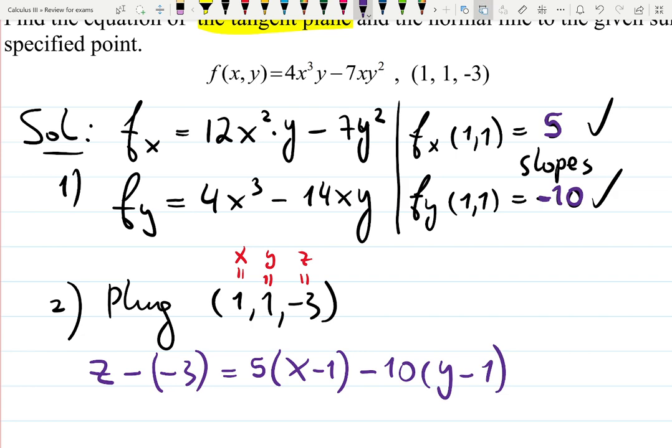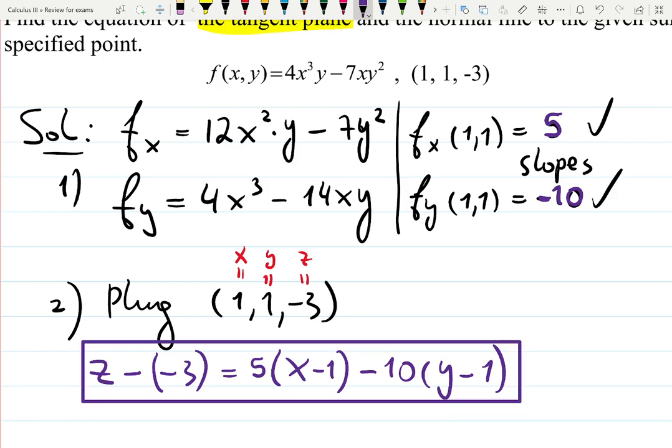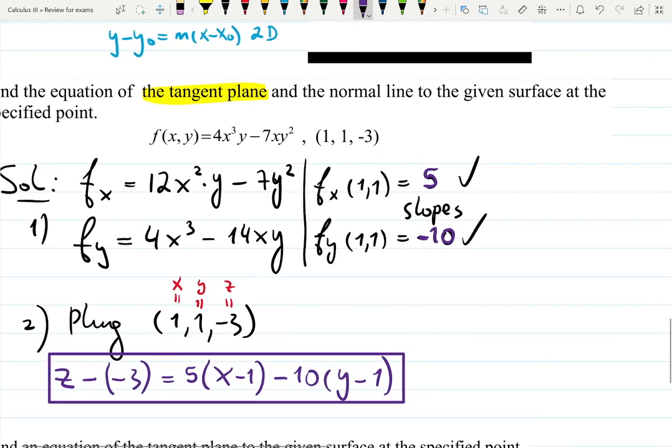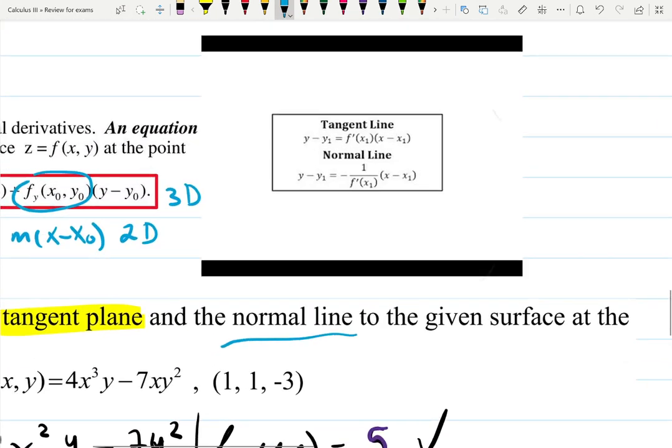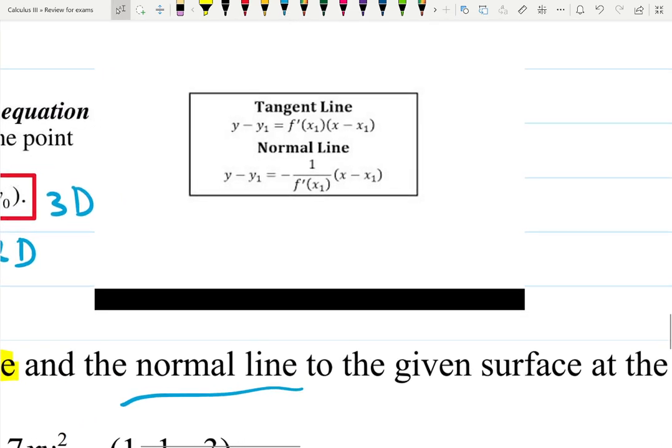I'll simplify it in a second, but first I want to answer the second part of the question. The second part of the question asks us to find the normal line. If you don't remember, the difference between tangent line and normal line is the slope. The derivative and the point gives you the slope for the tangent line. But the reciprocal, negative reciprocal of the derivative, gives you the slope for the normal line. Negative reciprocal means minus 1 over.